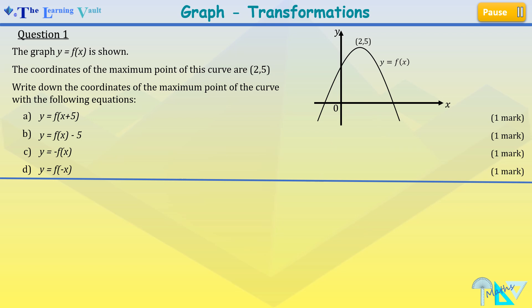Now to write down the coordinates for the maximum point of y equals minus fx. This is a reflection over the x axis. So our new coordinate is 2 and negative 5, and again one mark for this question.